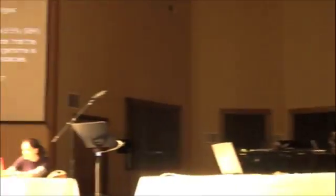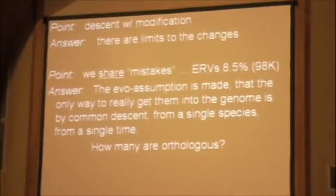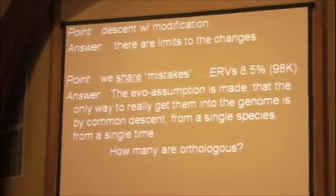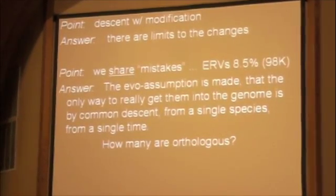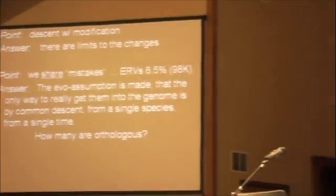We share these mistakes — these endogenous retroviral sequences in our DNA. 8.5% of our DNA is made of these things, and this is some kind of a marker showing that we're related to chimps. But it does make an assumption. I'm not saying assumptions are bad; in science you must make assumptions when you don't know something. The assumption is made that the only way to really get these things into the genome and into the germ cell lines is by common descent.